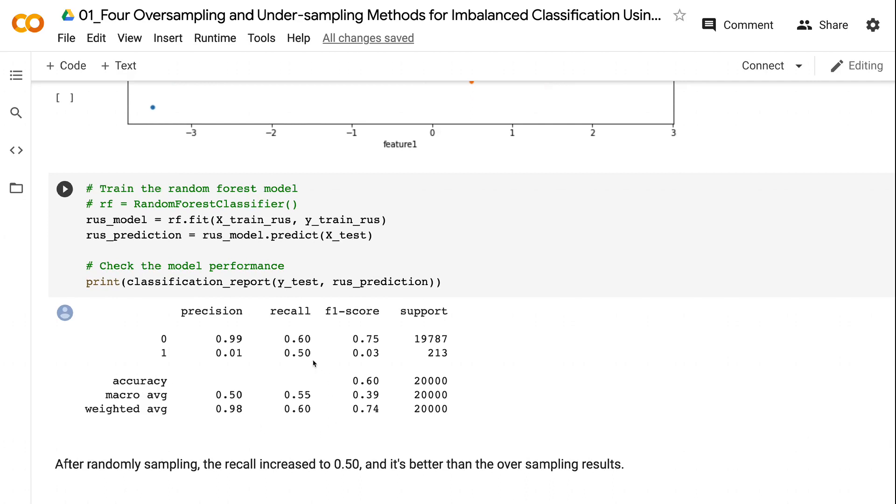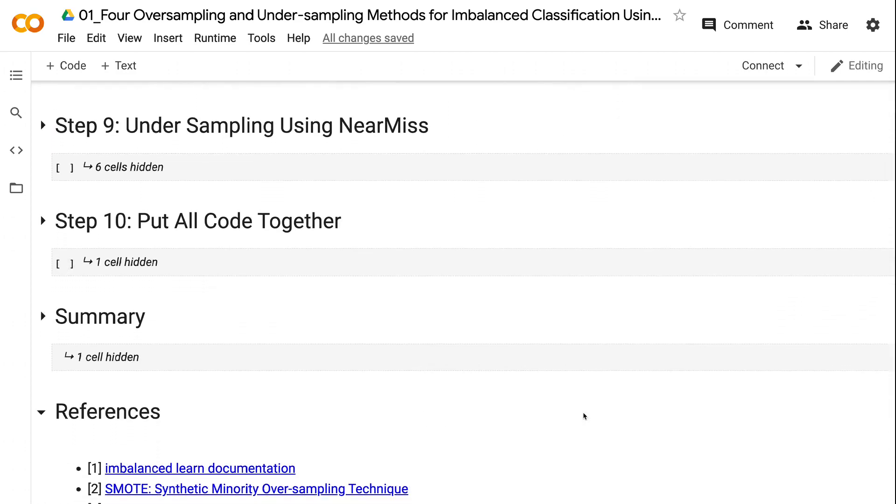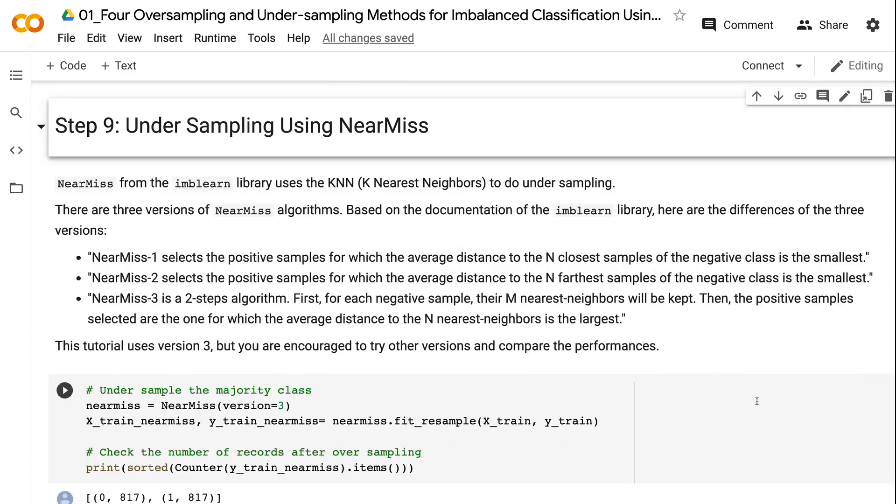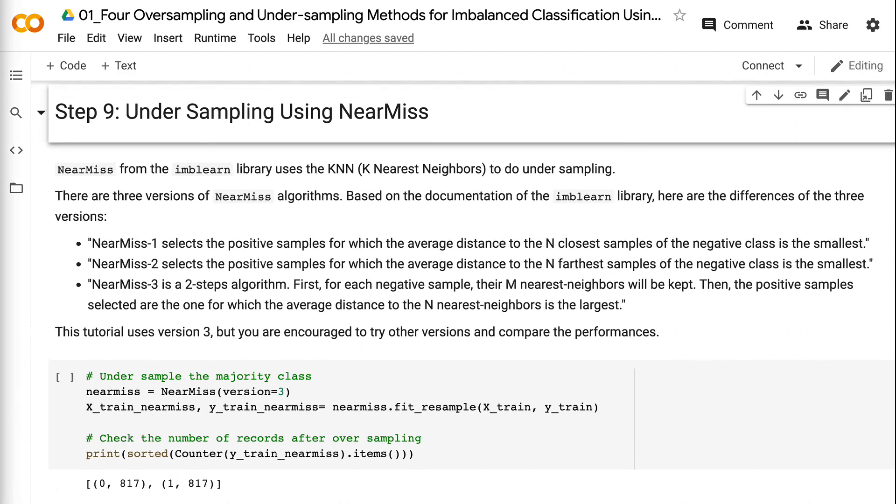Let's try another undersampling method called near-miss. Near-miss from the imbalanced learn library uses the k-nearest neighbors to do undersampling. There are three versions of near-miss algorithms depending on how the sampling is implemented. In this tutorial, we are using version 3, which is a two-step algorithm.